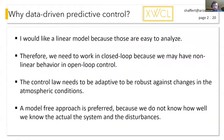So we really need to correct the wavefront errors before they appear. I would like to do that with data-driven predictive control. I want to use a linear model because those are easy to analyze. Therefore, we need to work in closed loop because we may have nonlinear behavior in open loop. Everybody likes pyramid wavefront sensors, but pyramid wavefront sensors have nonlinearities. The control law needs to be adaptive to be robust against changes in the atmospheric conditions. A model-free approach is preferred because we do not know exactly how well we can actually calibrate the system and the disturbances.